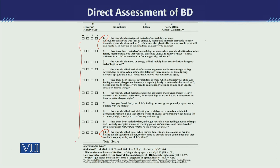For example, item number one asks: 'Has your child experienced periods of several days or more when, although he or she was feeling unusually happy and intensely energetic, clearly more than your child's usual self?' Similarly, another item asks about the child feeling unusually happy and intensely energetic and having to struggle very hard to control inner feelings of rage and the urge to smash or destroy things.